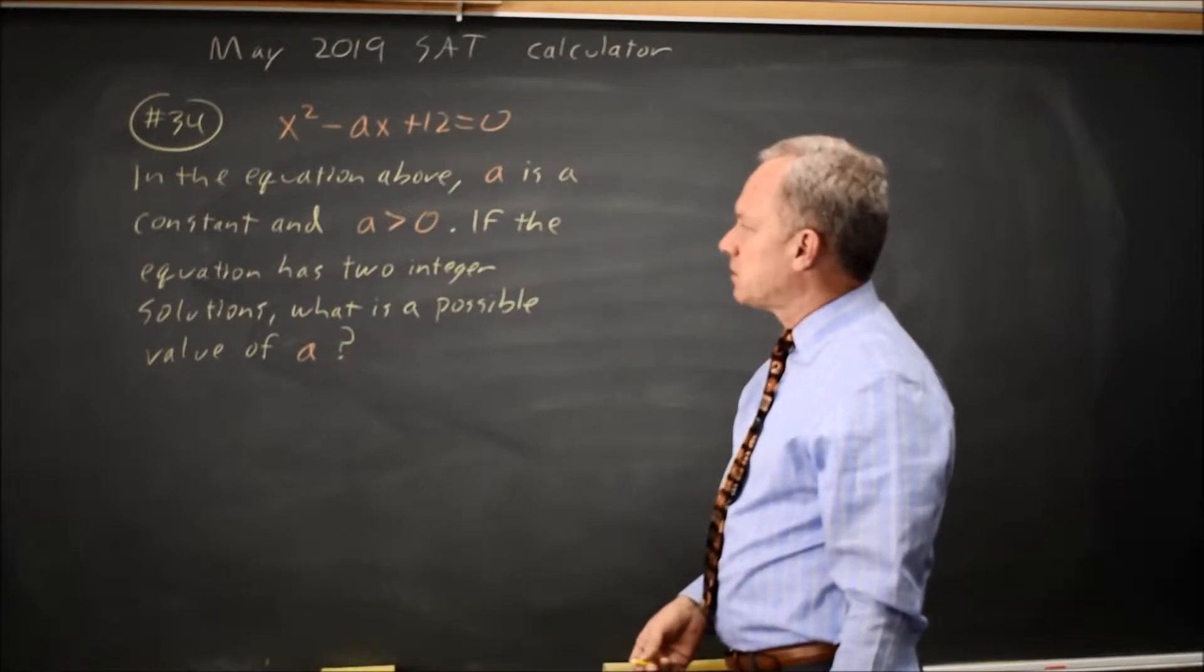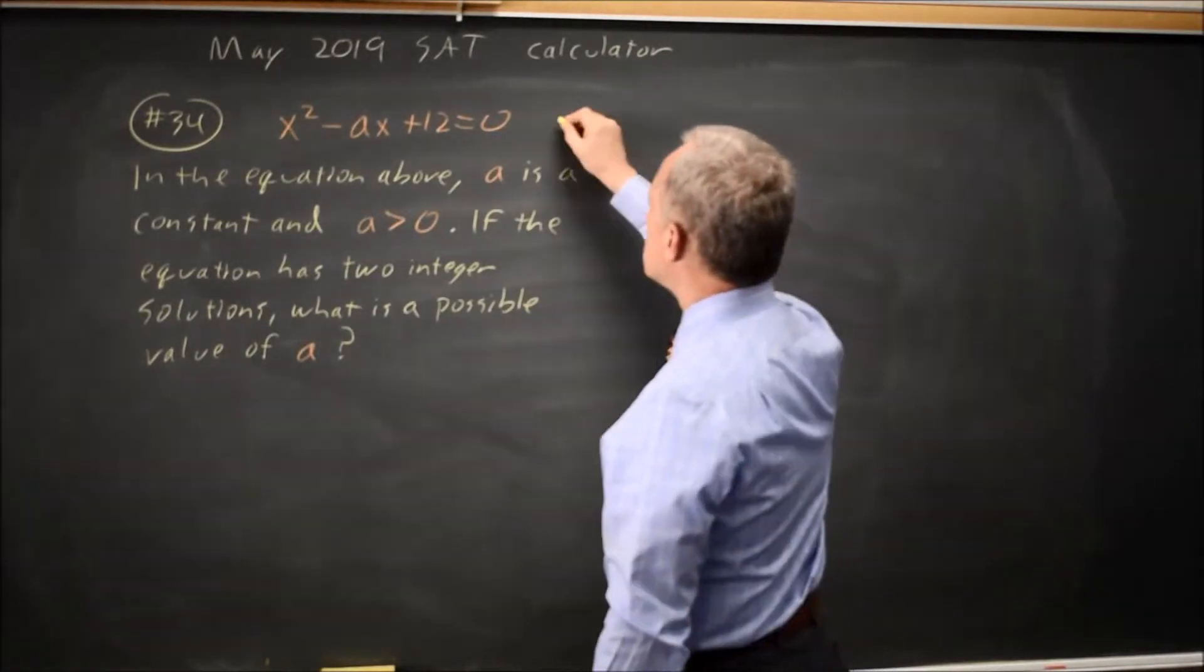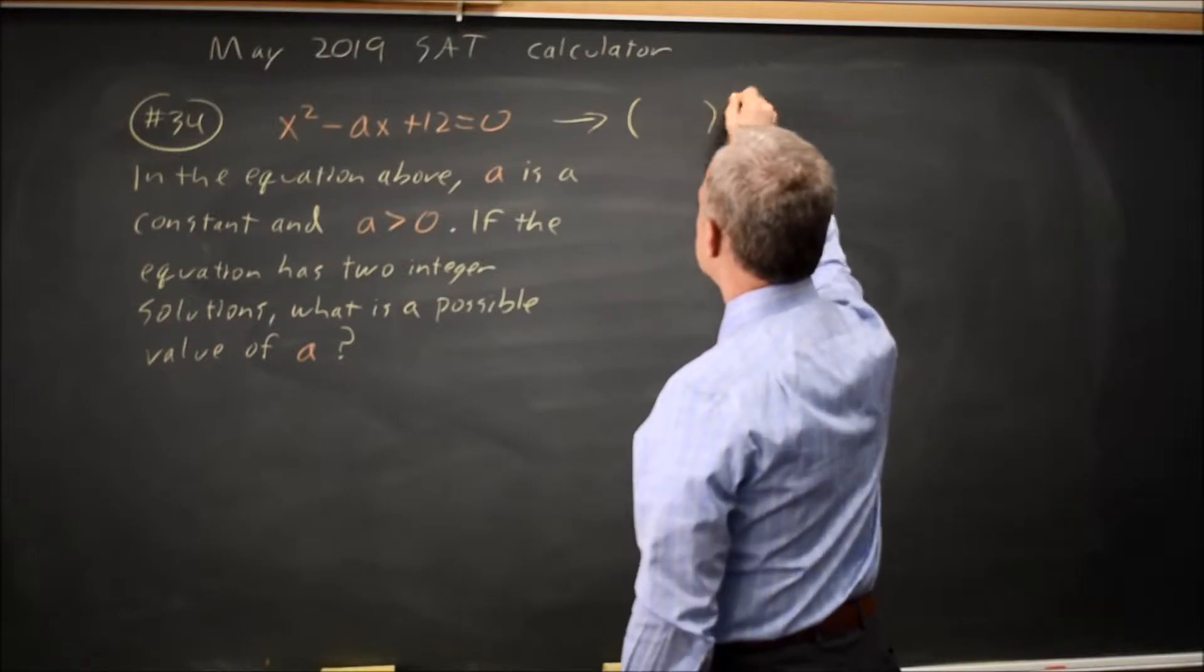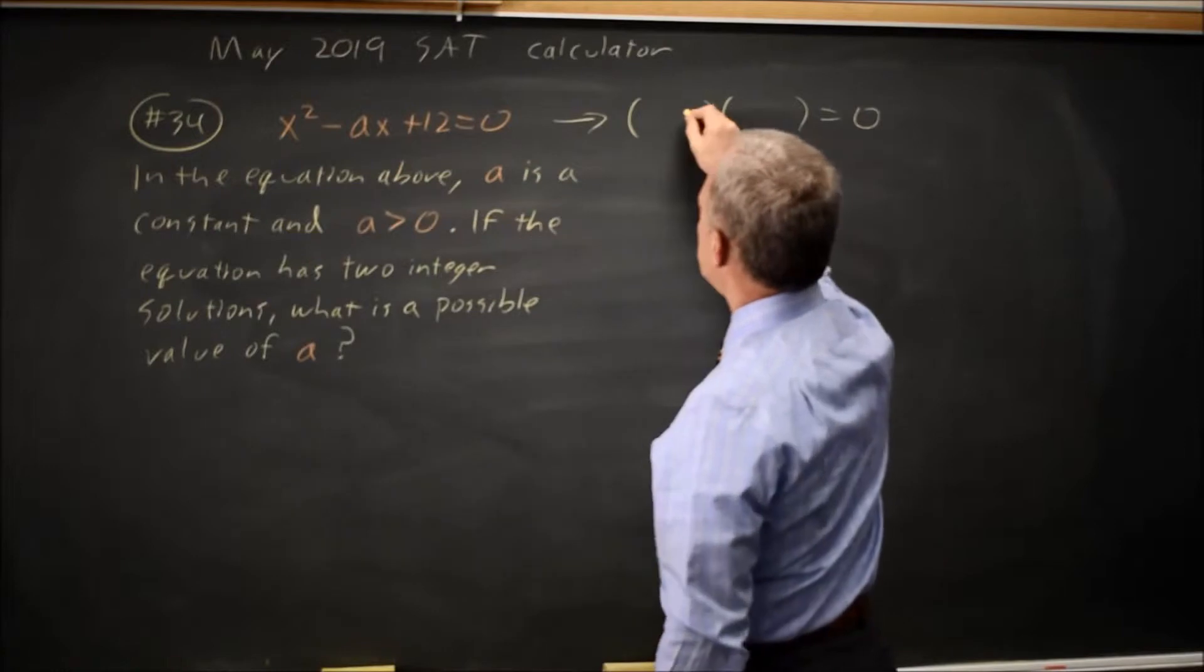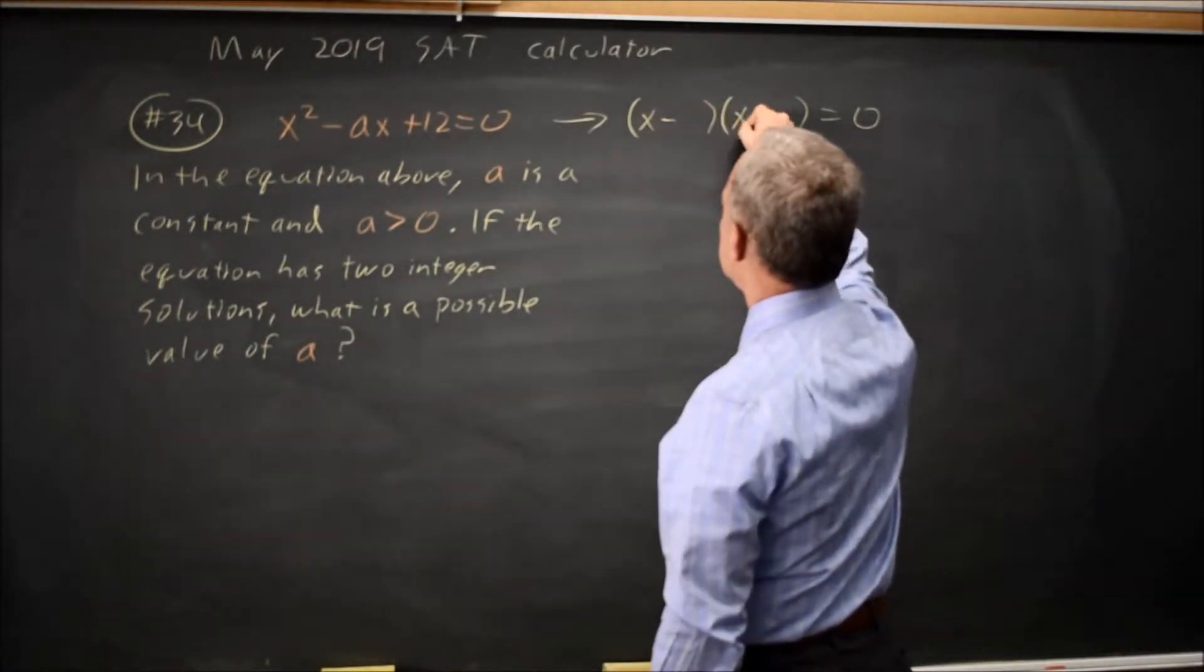And they say we have two integer solutions, which means this can factor. And the middle term is negative, the last term is positive, so I have X minus, X minus,